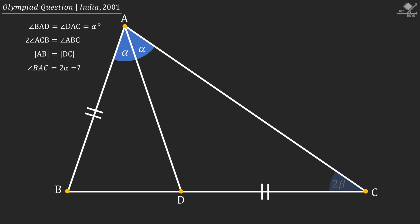First, let's call angle ACB as 2β degrees. Since it's given in the question, angle ABC will be 4β degrees.